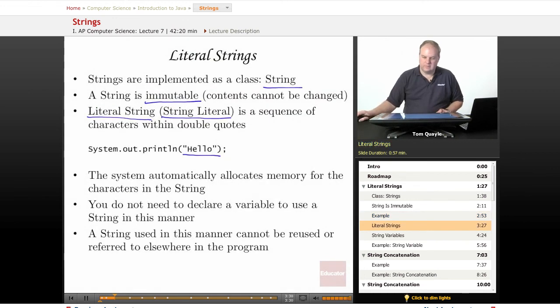When you use a string literal, it is not necessary to declare a variable or to allocate memory for the string. The system automatically allocates memory for the characters in the string. That's all done behind the scenes and you don't need to do anything special to make that happen. However, with the simplicity comes the limitation that a string that is used in this manner cannot be reused or even referred to later elsewhere in the program. So if you need another string literal, even if it contains the same characters, you need to declare another one if you're going to use it elsewhere in your program. When we talk about string variables next, we'll see how string variables overcome this limitation.